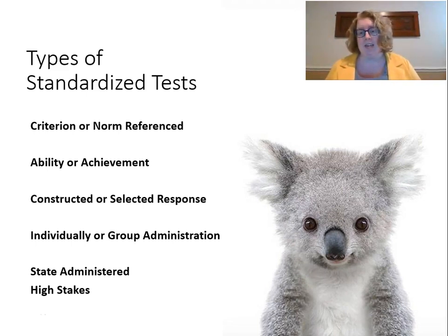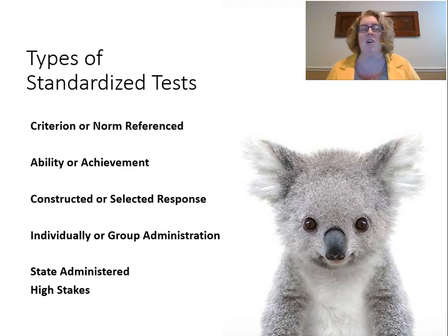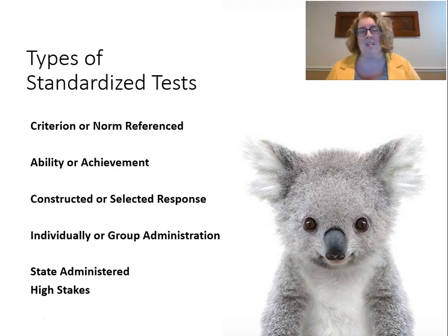We can classify tests in a number of ways. Criterion-referenced tests are evaluated based upon a set of criteria or standards — things like FSA tests and classroom tests. Norm-referenced tests are based upon a norming population or sample, comparing students to each other — things like ability and IQ tests. We'll also be talking about some norm-referenced achievement tests.